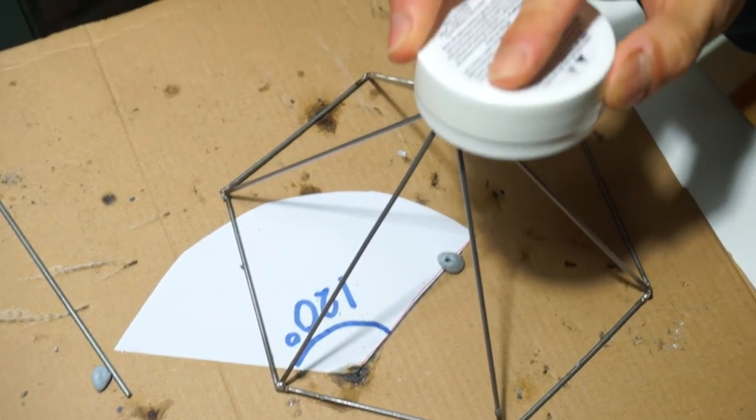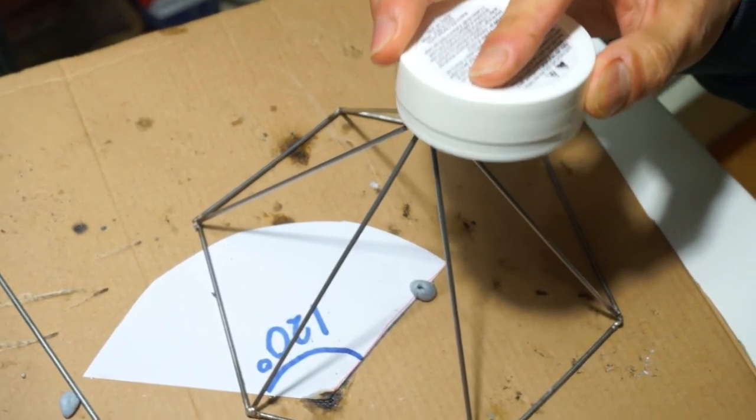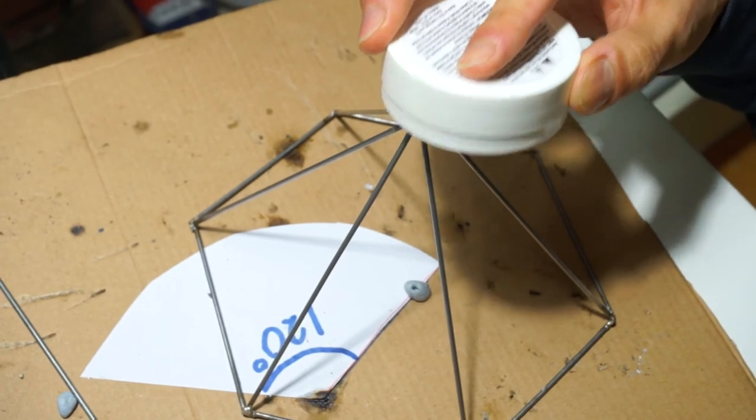After removing all the blue tack and the 12cm guide wire, I dipped the apex of the pyramid in flux and soldered it all together.